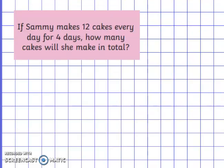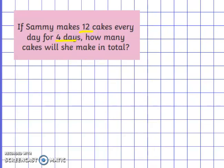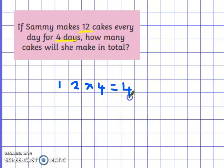We've got a word problem. If Sammy makes 12 cakes every 4 days, how many cakes will she make in total? The important information is she makes 12 cakes and she does it every 4 days. So the calculation we're doing is 12 times 4. Count up in 4s with me: 4, 8, 12, 16, 20, 24, 28, 32, 36, 40, 44, 48. Sammy makes 48 cakes. Well done if you counted along with me.